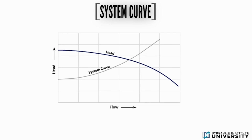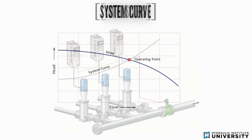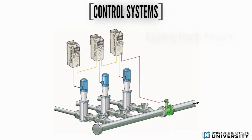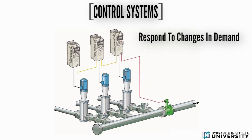By overlaying the pump curve, the operating flow and head is identified at the intersection point, which is discussed in more detail in the introduction to basic operating theory training module. Adjusting a system flow rate or pressure is a consideration for most pumping systems to respond to changing demands and conditions.